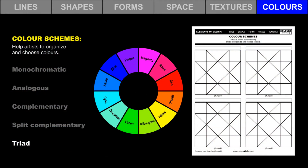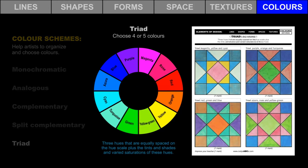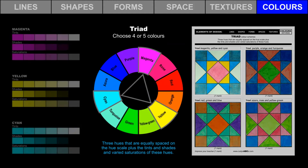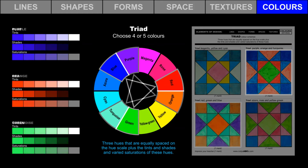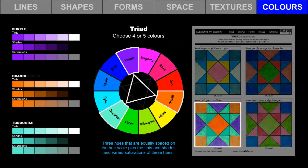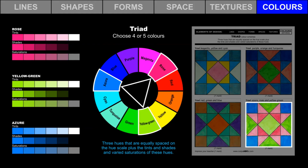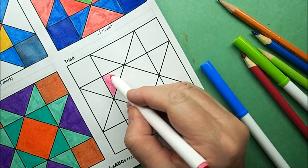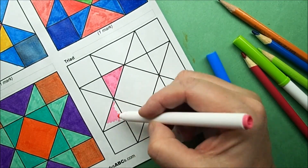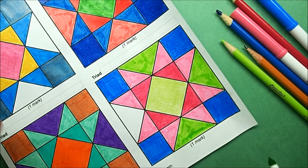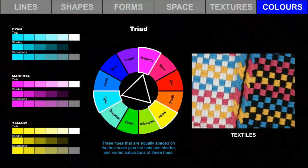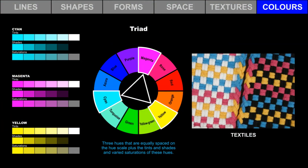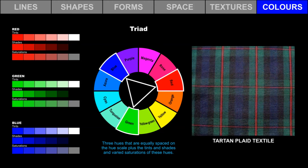Let's try triad color schemes. Triad color schemes include three hues that are equally spaced on the hue scale, plus the tints and shades and varied saturations of these hues. Choose four or five colors from this range. Use pencil crayons and markers to create four different triad color schemes. Here is an example of a triad color scheme in textiles. This tartan plaid textile also has a triadic color scheme.